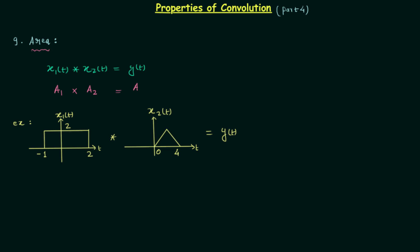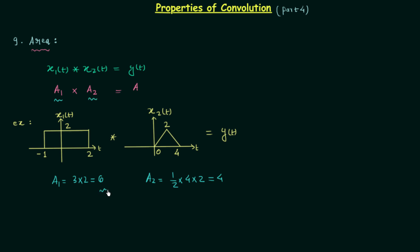To calculate the area, we first calculate the area of signal x1(t). The width is 3 and the height is 2, so area A1 equals 3 multiplied by 2, which equals 6. The area of the second signal A2 equals half base multiplied by the altitude. The altitude is 2, so we have half multiplied by 4 multiplied by 2, which equals 4. From the area property, the total area of the resultant signal equals A1 times A2, so 6 multiplied by 4 gives us the area of y(t), which equals 24.